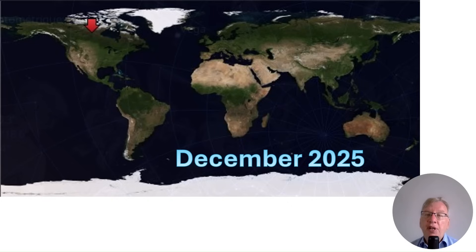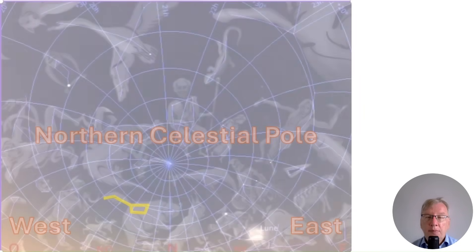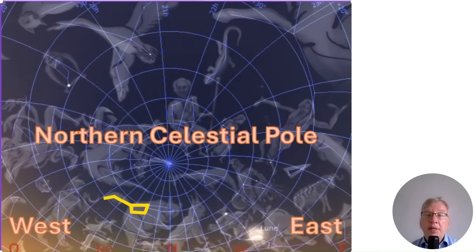Let's first simulate the sky in the northern region of Canada in December 2025 using Stellarium. The main stars of the Big Dipper circle around the celestial pole during the course of one year but also during one night.